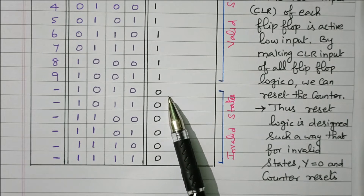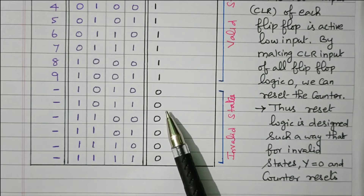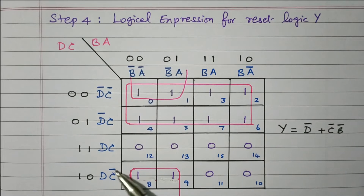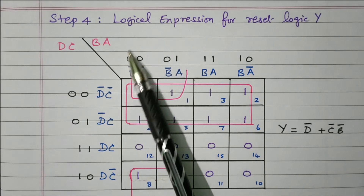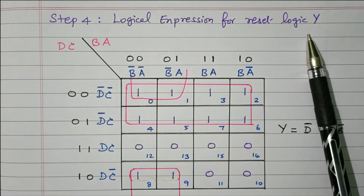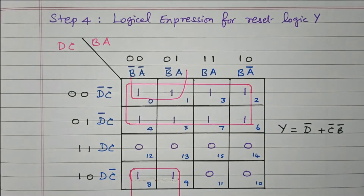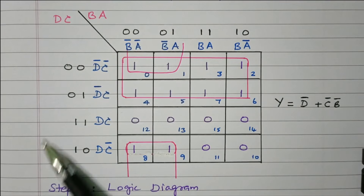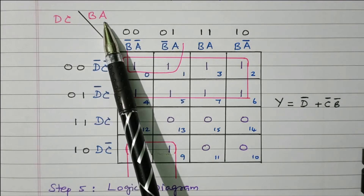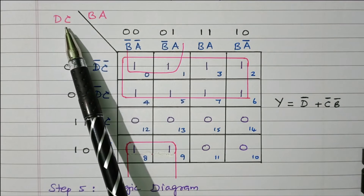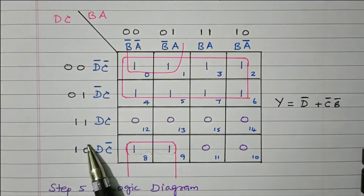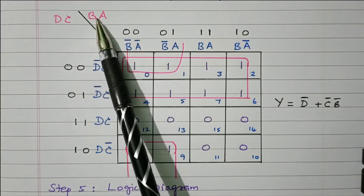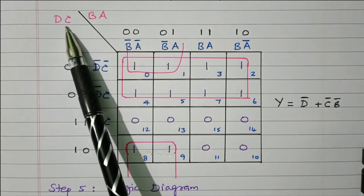Now we will see the logical expression for the reset logic Y using the Karnaugh map. This is the K-map for finding the logical expression of reset logic Y. There are 4 variables: A, B, C, D. D is the MSB and A is the LSB. D and C are arranged vertically, B and A are arranged horizontally — totally 4 variables giving 2×2 = 4 combinations each axis.